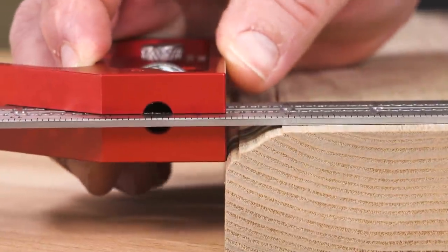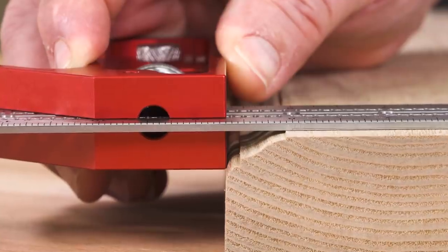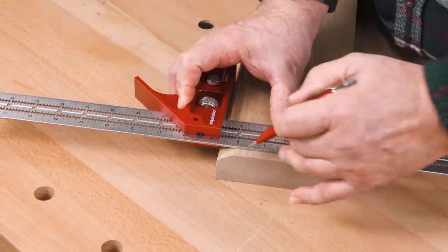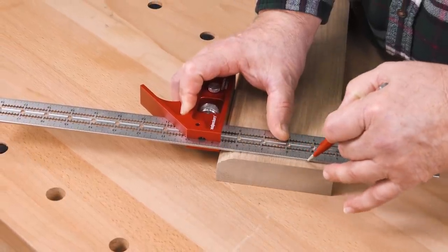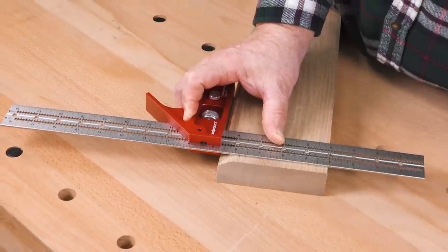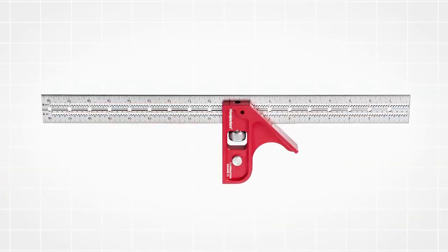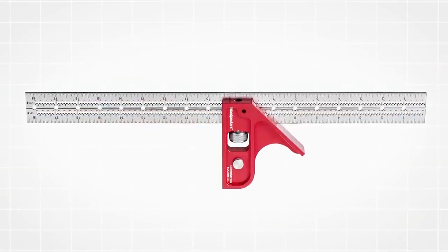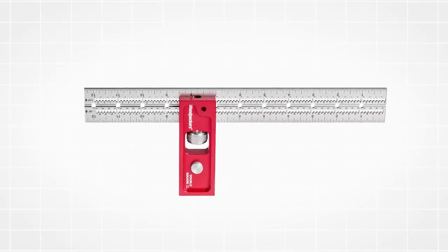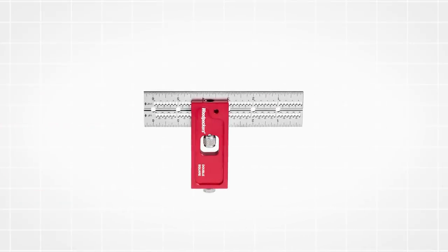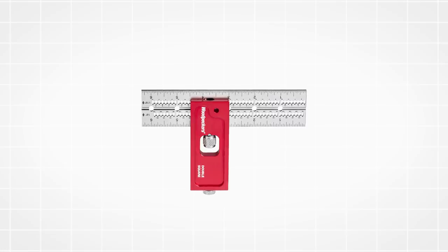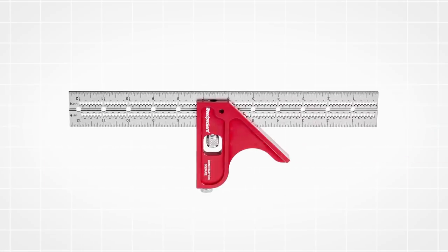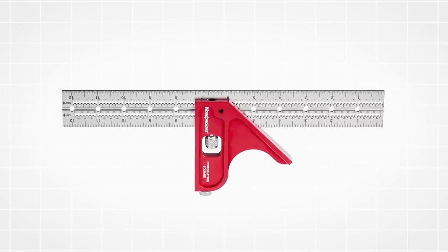The XL models have a head that is a full one inch thick. You'll never worry about molded edges throwing you off your angle. With an 18 inch blade on the combination square XL and a 12 inch blade on the double square XL. The standard size double square comes with a six inch blade and the standard combination square comes with a 12 inch blade.